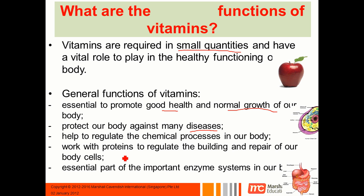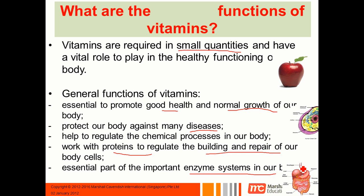You also need vitamins to help regulate chemical processes in your body. Vitamins also work with proteins to regulate the building and repair of your body cells, and lastly they are also important in the enzyme systems of your body — for example in digestion. You just learned about digestion, and vitamins are necessary for that.